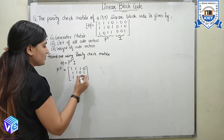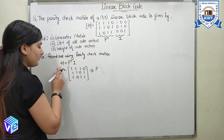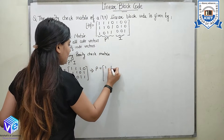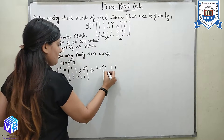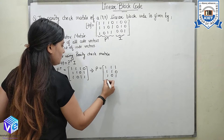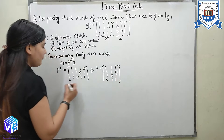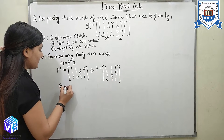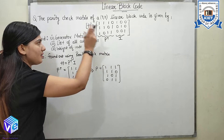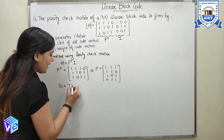So this is my P transpose. From here I know what P is — since I know P transpose, P would be the transpose of that, giving P = [1 1 1; 1 0 1; 1 1 0; 1 1 1]. Now, if I have to find the generator matrix, the generator matrix for the [P transpose | I] parity check matrix is given by G = [I | P].